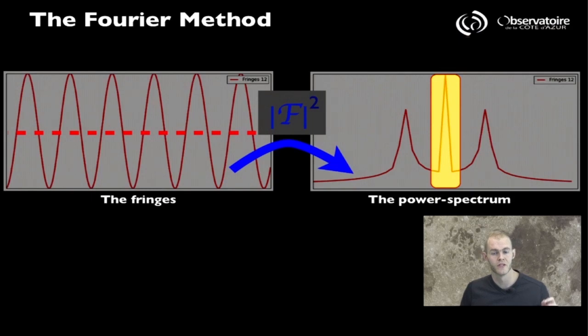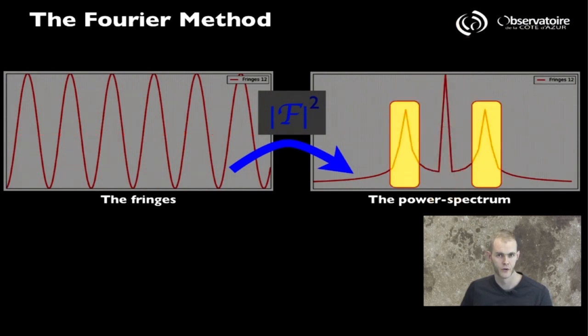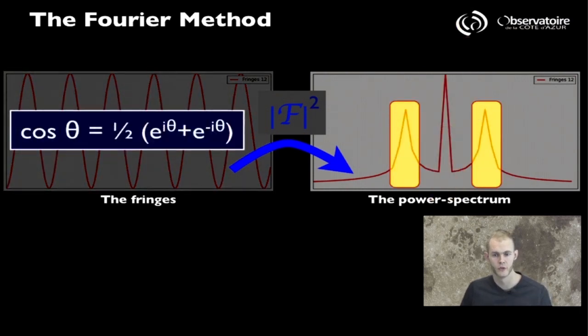Now we see that there is a direct relationship between the properties of our fringes and the properties of our Fourier transform. The first bit of information we see is that the mean intensity level of our fringes is going to find itself encapsulated in the central peak that you observe in the Fourier transform space. That central peak is surrounded by two side lobes, which happen to correspond to the actual sinusoidal modulation.